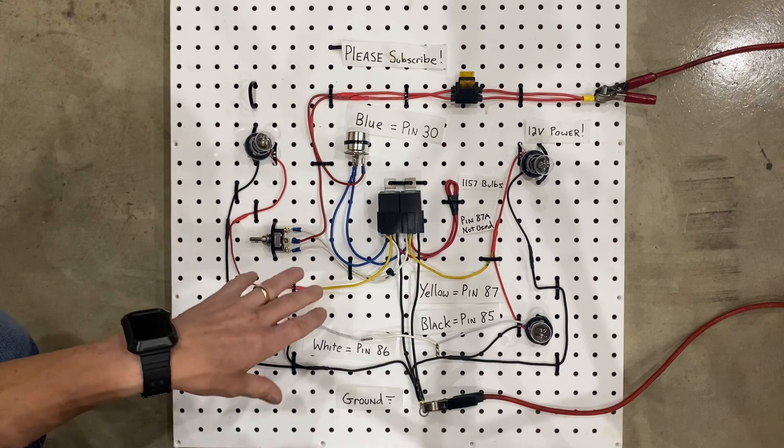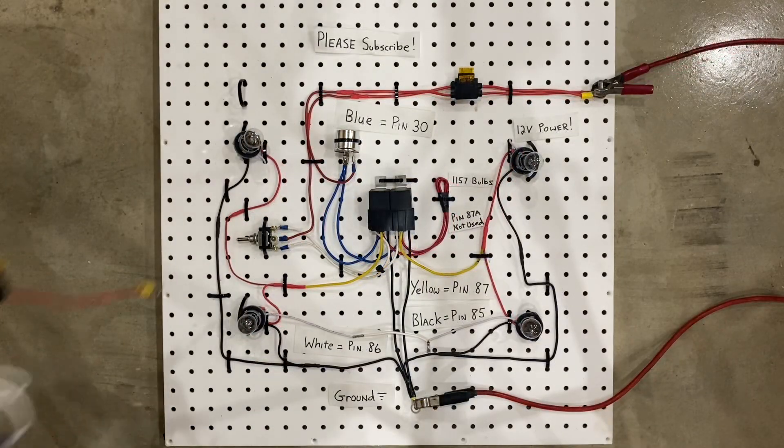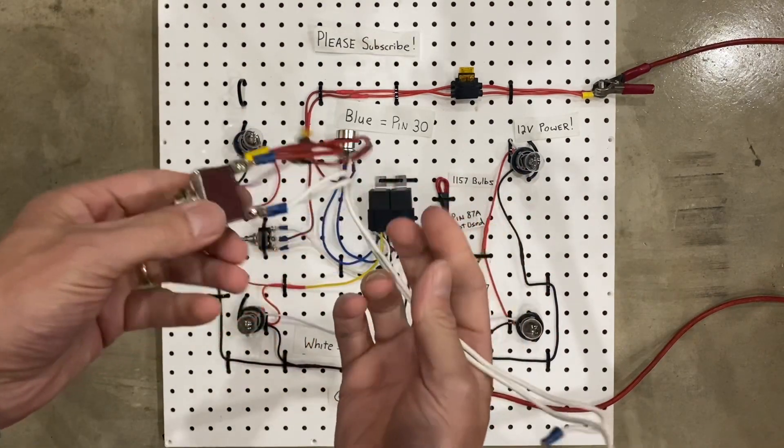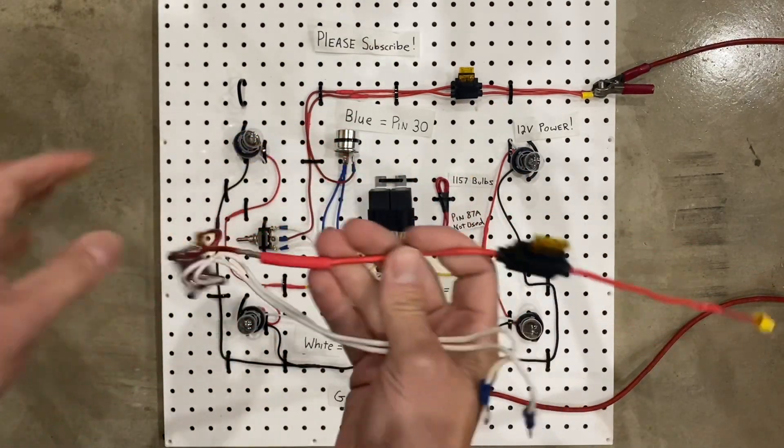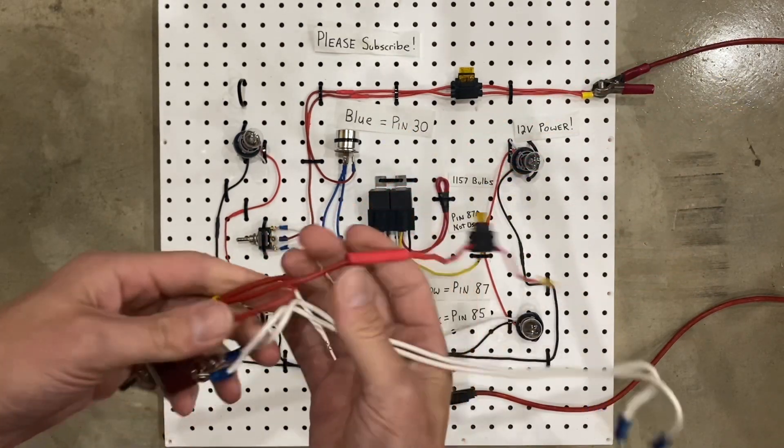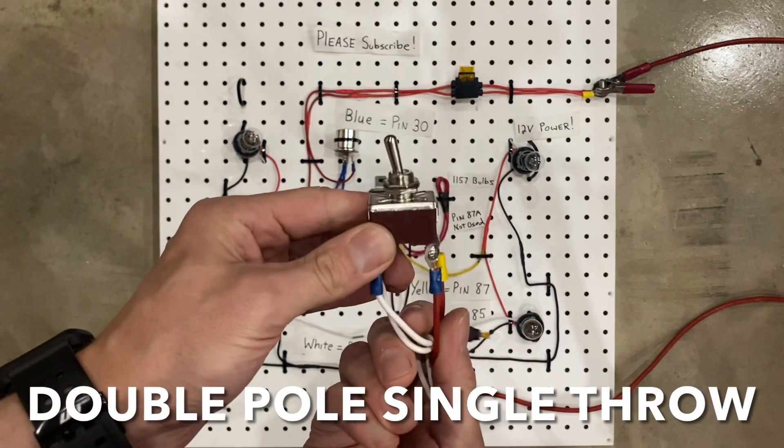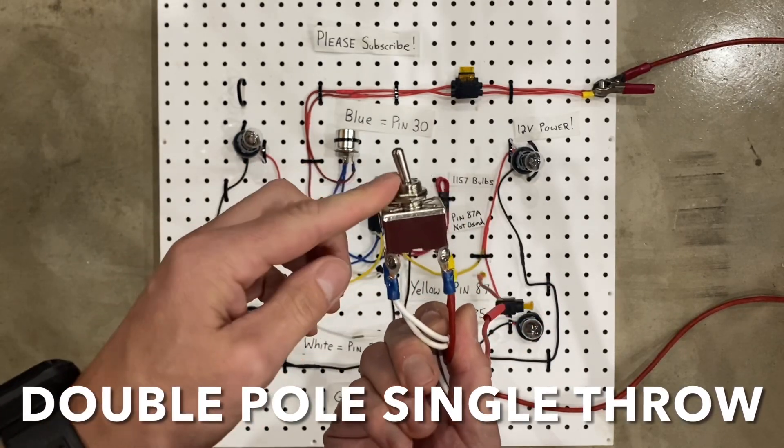Alright, so now that we got that sorted out, let's talk about the actual hazard switch. The hazard switch circuit is actually super easy to wire. All that it has is a power wire with a fuse in it, which goes to a switch which is called a double-pole single-throw switch.